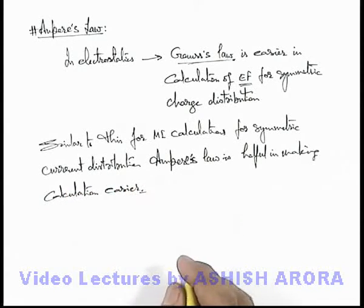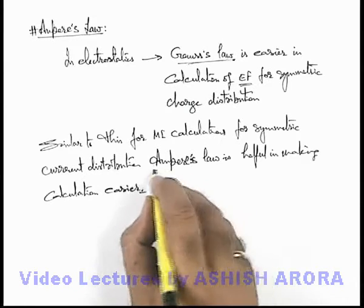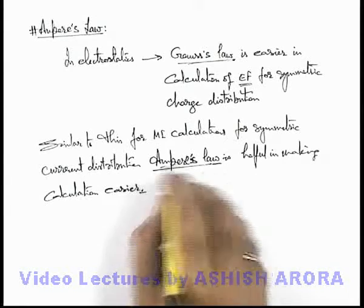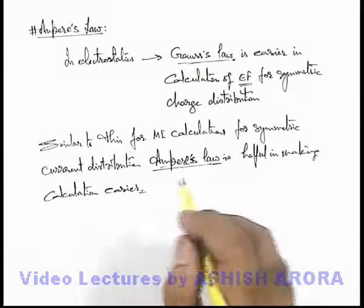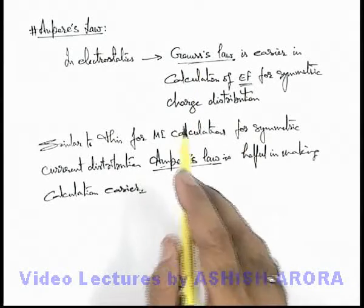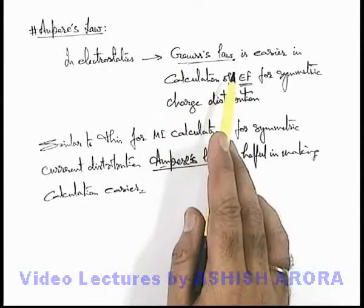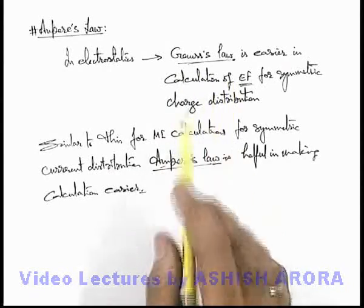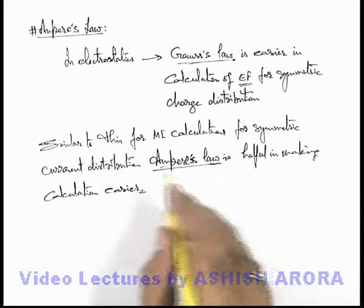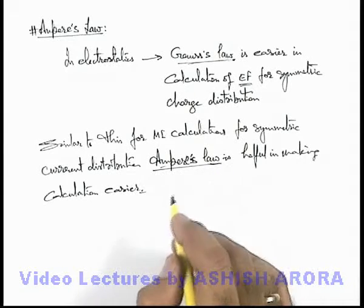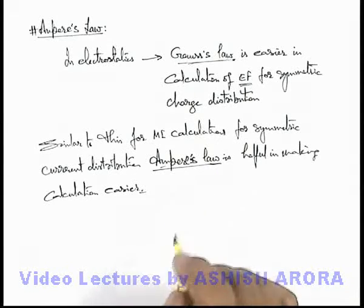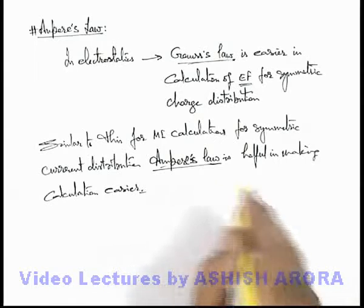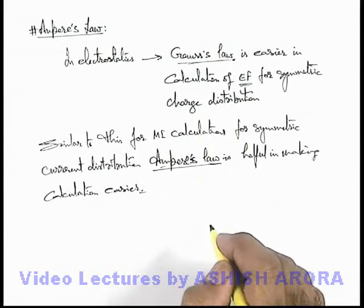So we'll discuss this Ampere's Law. Somehow you can say it is similar to Gauss's Law, but it is slightly different because Gauss's Law gives us a surface integral for a closed surface, whereas in Ampere's Law we calculate the line integral of magnetic induction for a closed path.